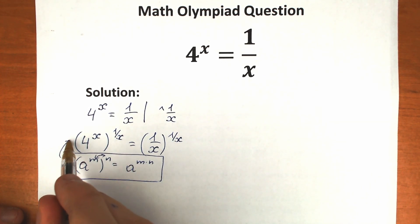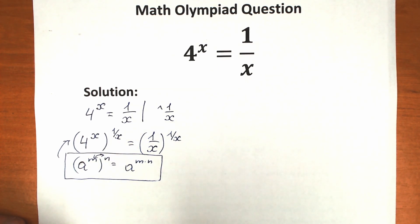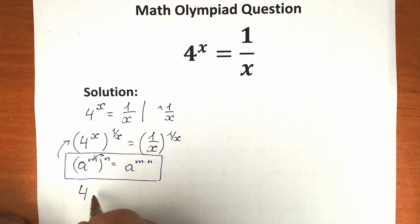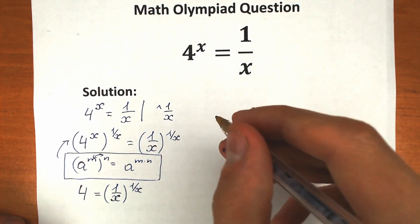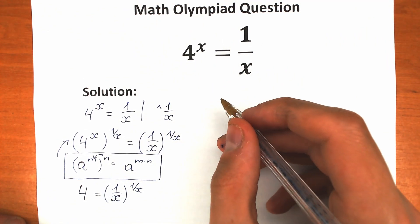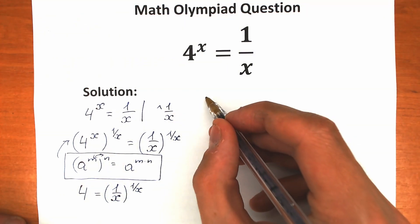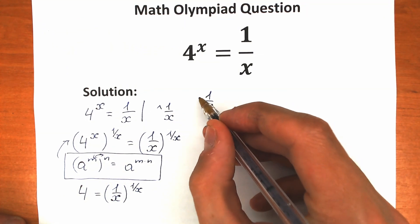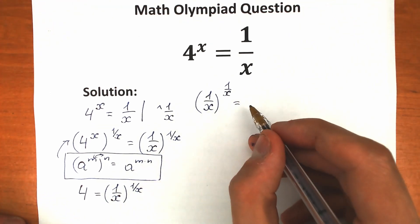Now let's apply this rule in our case. We have x times 1 over x, which gives us only 1. So on the left hand side we have only 4, equal to 1 over x to the power 1 over x. Let's swap positions and write 1 over x to the power 1 over x on the left hand side, equal to 4 on the right.